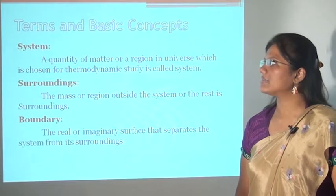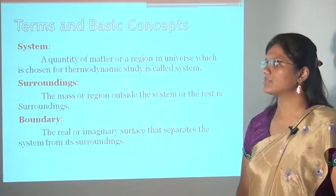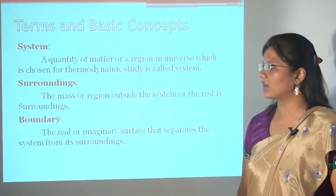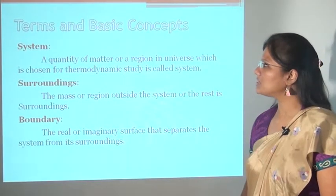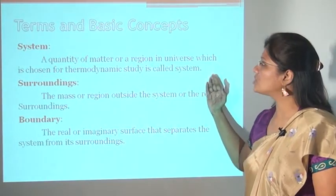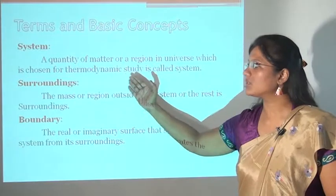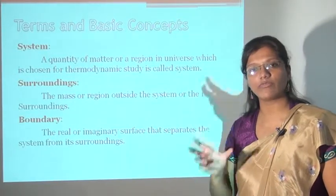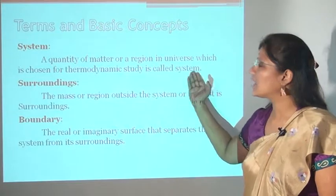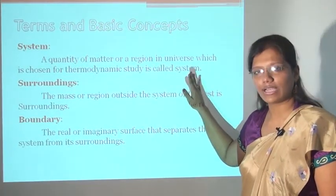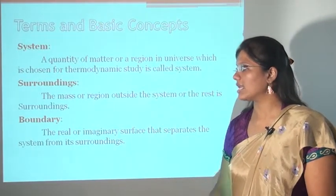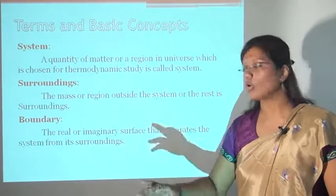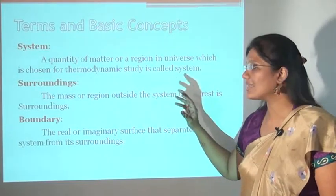Now, some of the terms and basic concepts of thermodynamics. Before we start into thermodynamics, we have to know these things. First is system — a quantity of matter or region of the universe chosen for thermodynamic study is called the system. Second is surroundings — the mass or region outside the system, or the rest, is known as surroundings.